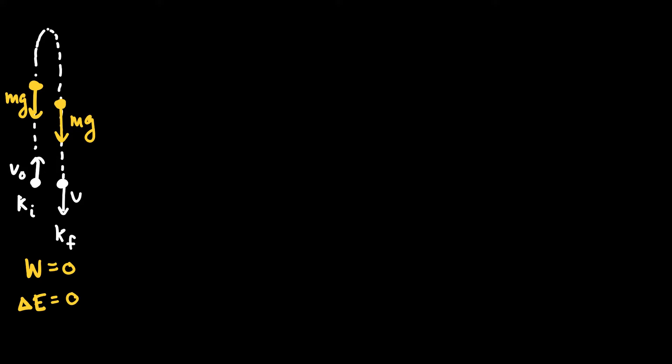Our understanding of gravitational potential energy tells us that the two positions are at the same height. Whatever kinetic energy the ball had at the beginning was converted into gravitational potential energy between those two points, and then converted back into the same amount of kinetic energy when it returns to its original height.